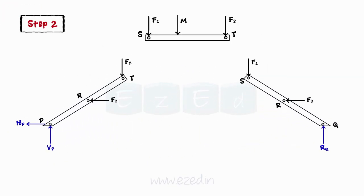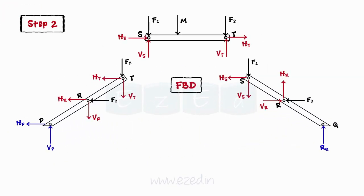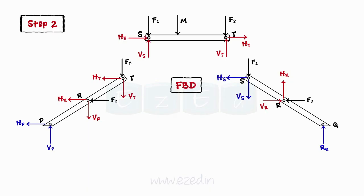Dismember the frame and draw the free body diagram of each member separately. At the internal connection, i.e., pin, the directions of components of the reaction are assumed on any one of the members, and the opposite direction is assumed on the other member. This is done because when an internal force is exposed, it occurs in a pair, having the same magnitude and line of action but opposite direction.